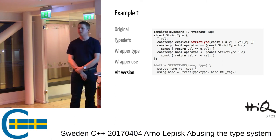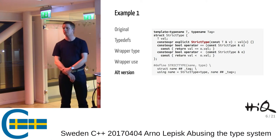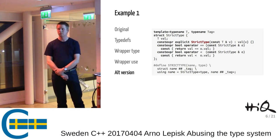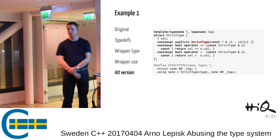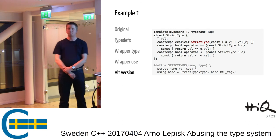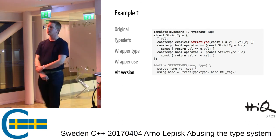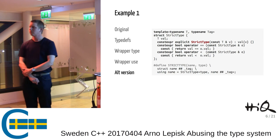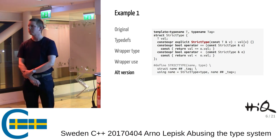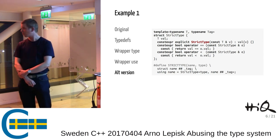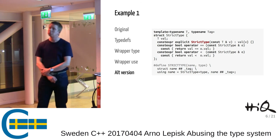One cool thing about this is that if the underlying type doesn't support less-than, and you don't use it, the compiler won't instantiate it, so it's fine. Also, GCD is actually implemented in C++17 as a constexpr.